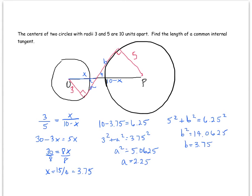So together, a plus b give us the length of that common internal tangent, so 2.25 plus 3.75 get us 6. I guess I'll call that 6 units.